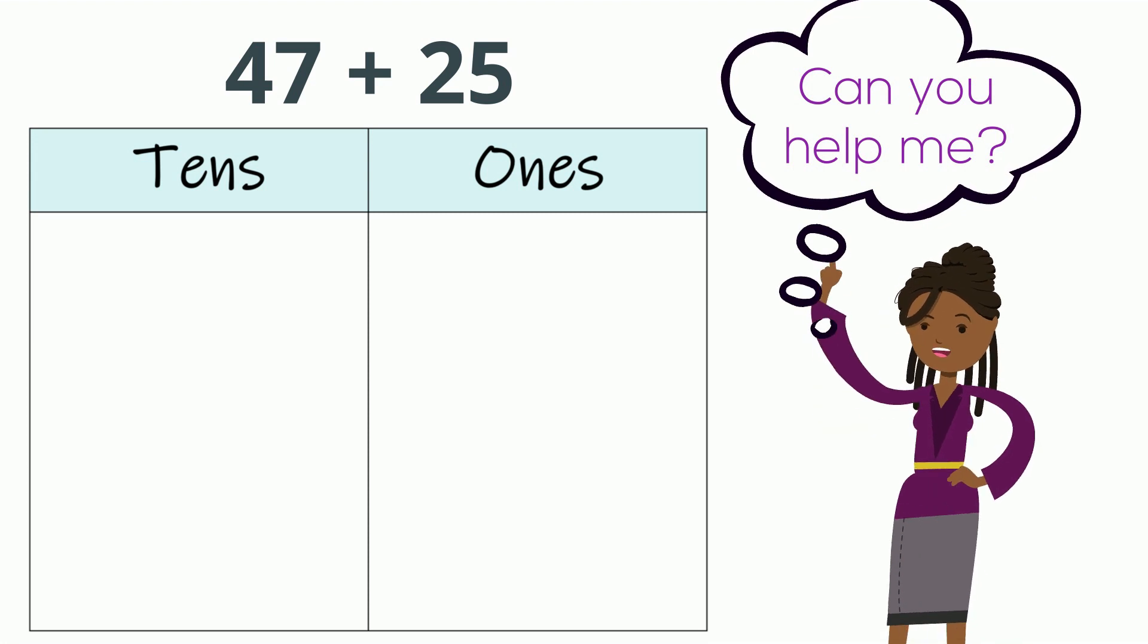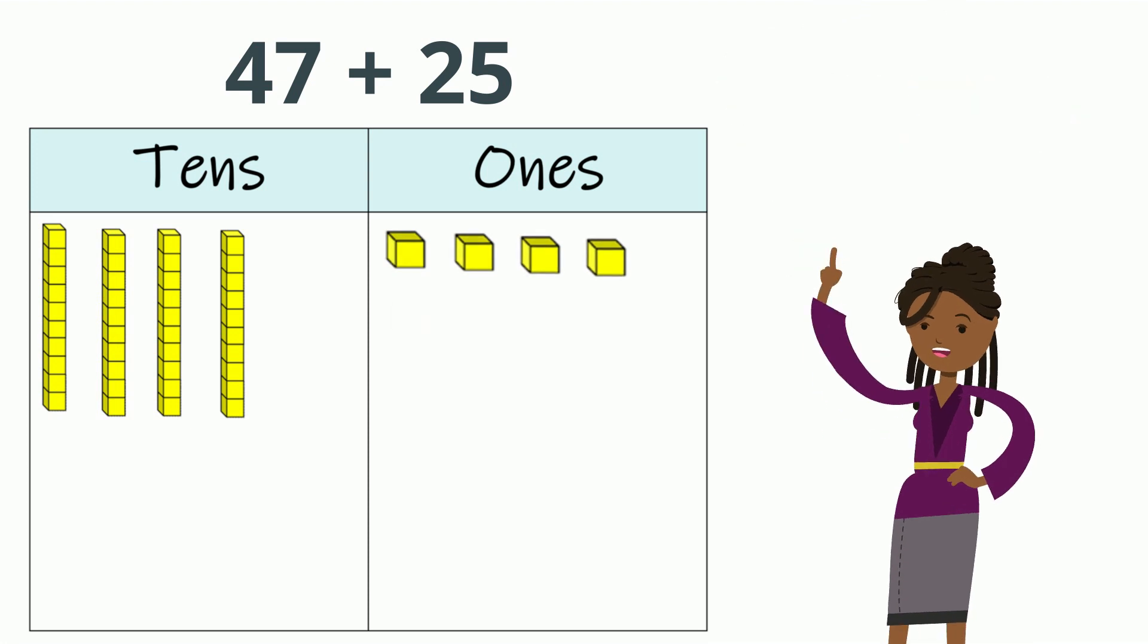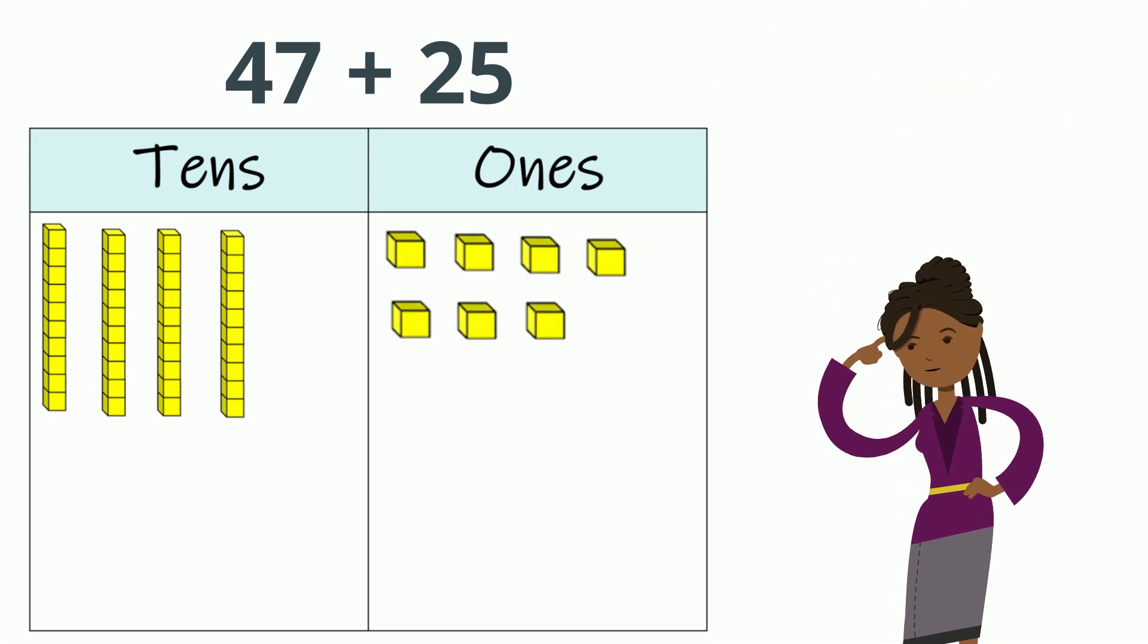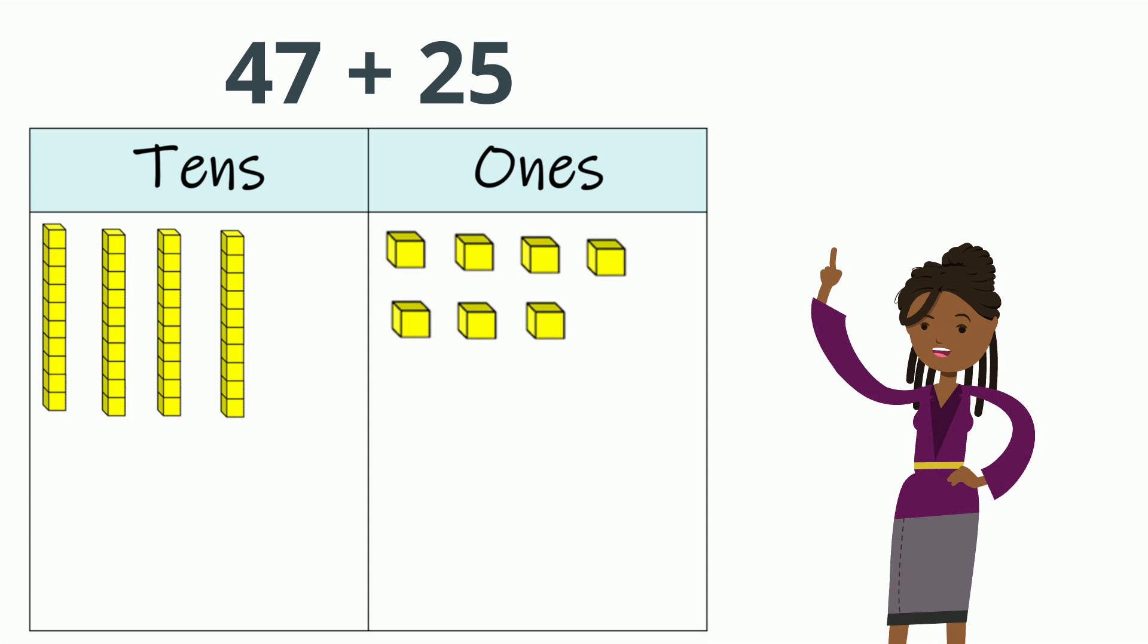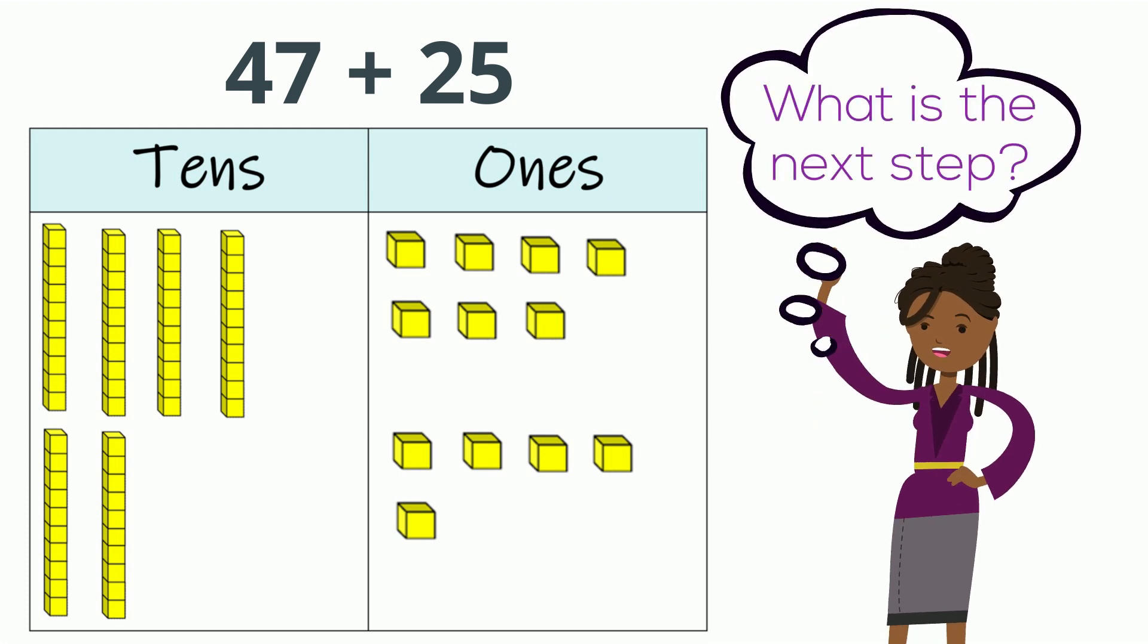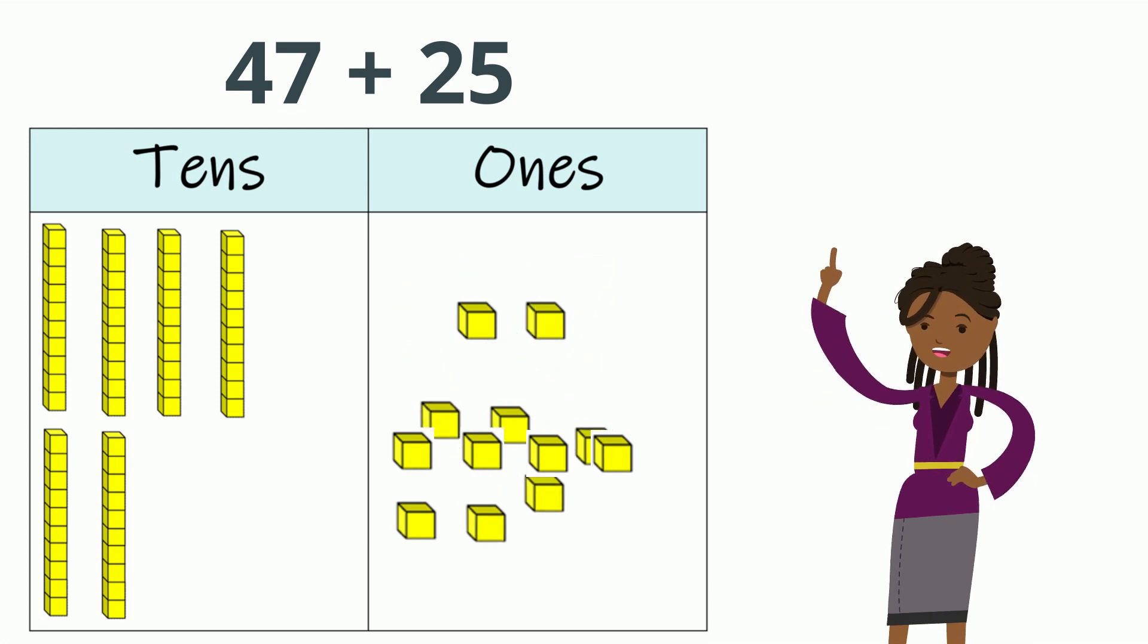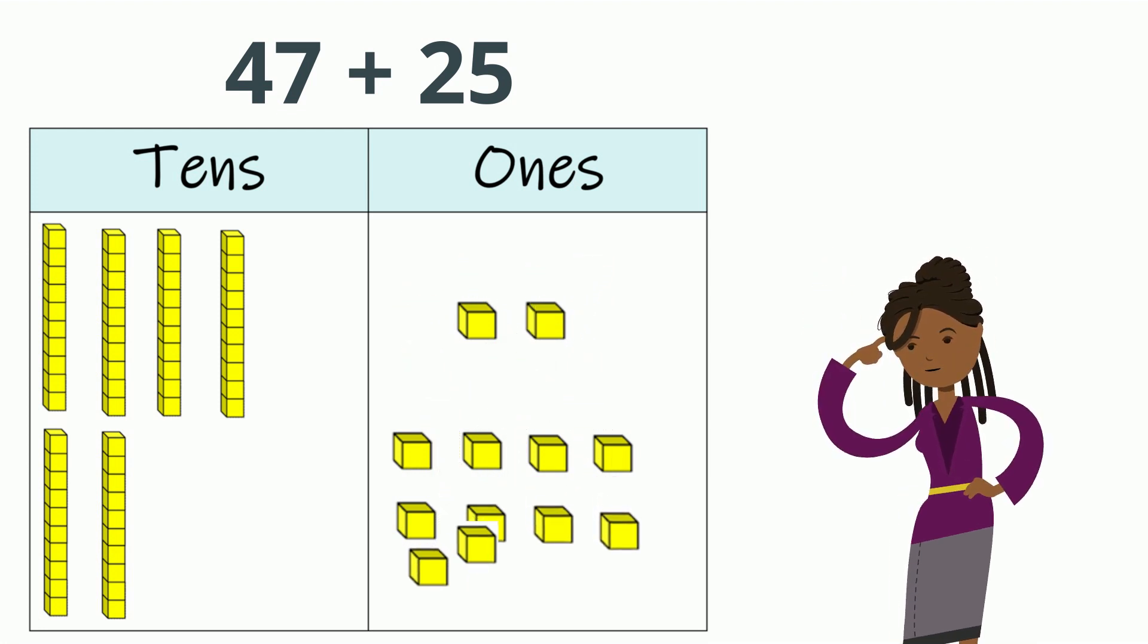You are right. Four 10s and seven 1s. What about the number 25? Two 10s and five 1s. Now, what is the next step? Ah, that's right. We are going to see if we can group the 1s to make a new 10. That is called regrouping.